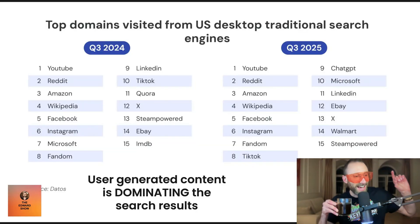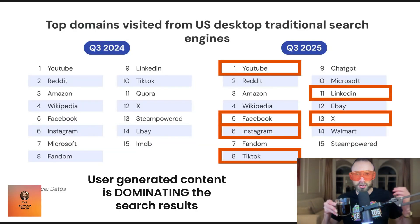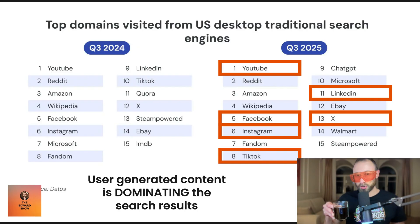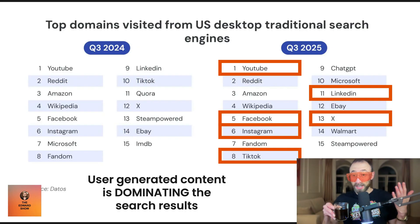We know that UGC — user-generated content — is doing extremely well in search: YouTube, Medium, LinkedIn, X, Facebook.